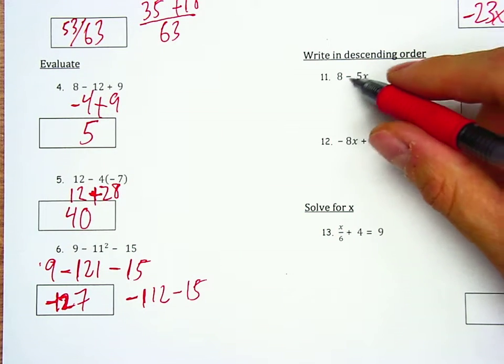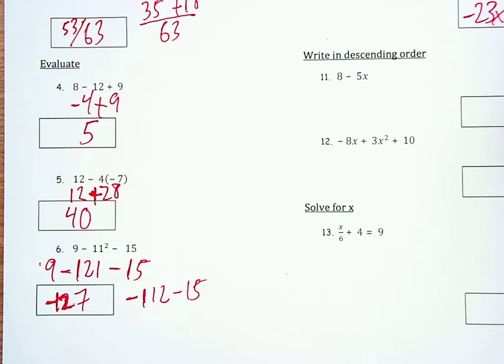Descending order means put the x first, put the constant at the end. So put the 8 at the end, it's positive 8, so it's plus 8. And put the minus 5x at the start. Minus 5x plus 8.